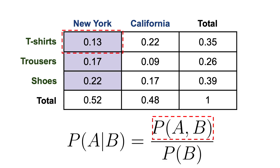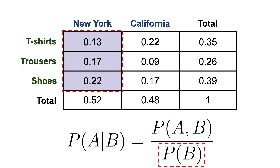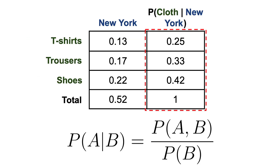Mathematically, this is done by dividing the corresponding joint probability by the probability of the location being New York. And if we do that for all the clothes, we get the following results. We can observe that the conditional probabilities are different from the joint probabilities, and that the actual probability of selling a t-shirt knowing that our user is from New York has increased from 0.13 to 0.25.